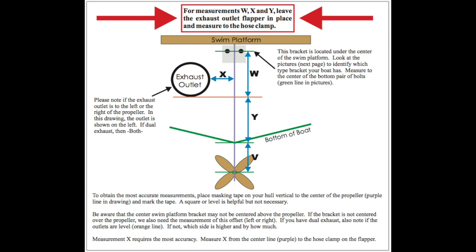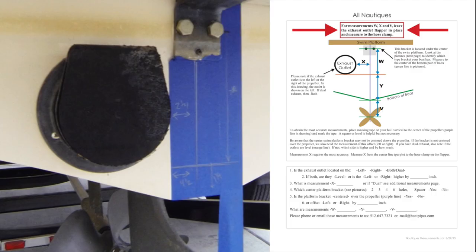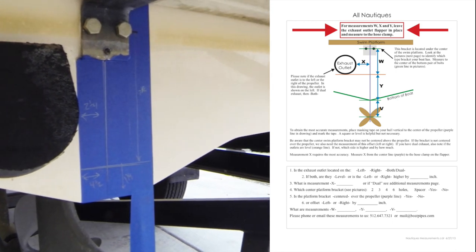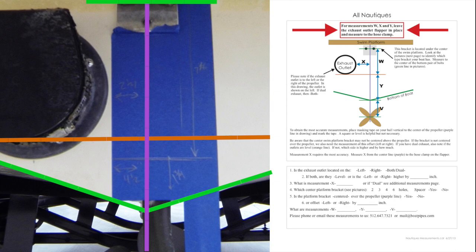Fresh Air Exhaust provides simple instructions to ensure your new exhaust system fits flawlessly. Use the directions provided to precisely measure the boat. To obtain the most accurate measurements, place masking tape on your hull vertically to the center of the propeller.